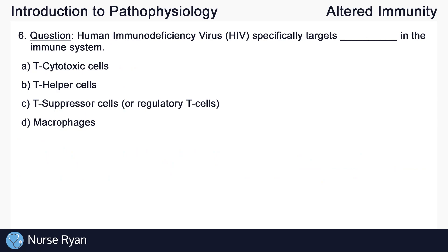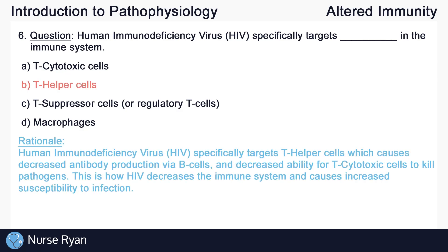Question six: human immunodeficiency virus, or HIV, specifically targets blank in the immune system. The answer here is B, T helper cells. HIV specifically targets T helper cells, which causes decreased antibody production via B cells and decreased ability for T cytotoxic cells to kill pathogens. This is how HIV decreases the immune system and causes increased susceptibility to infection.